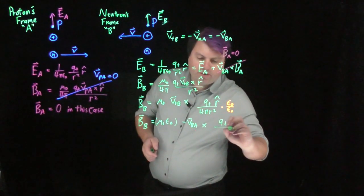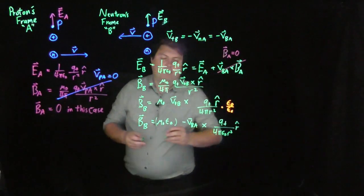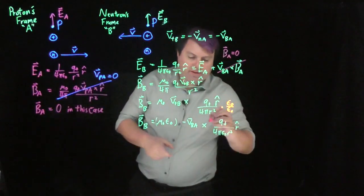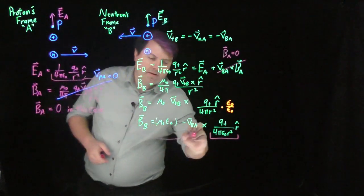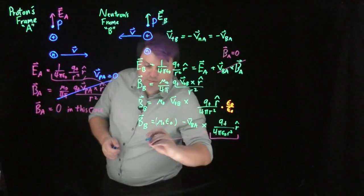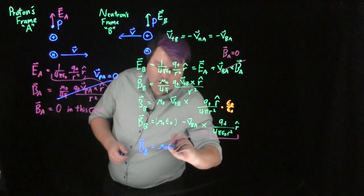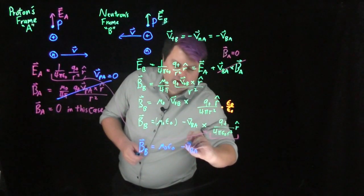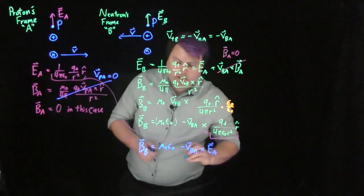So I have Q plus over 4 pi epsilon naught r squared r hat. Well, what does this look like? This looks like all the way over here. So my magnetic field in B, mu naught epsilon naught negative V_BA crossed with E sub A.